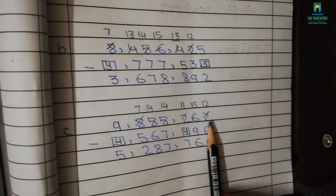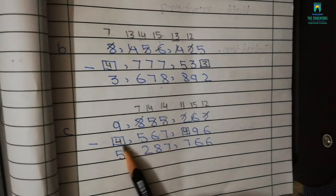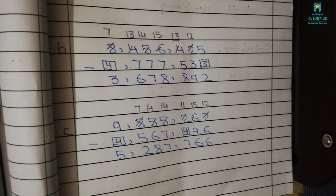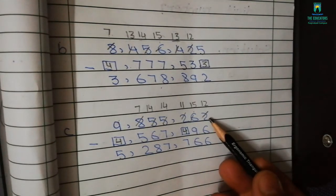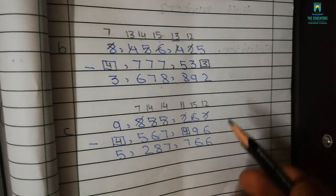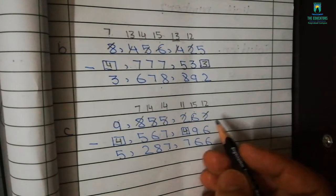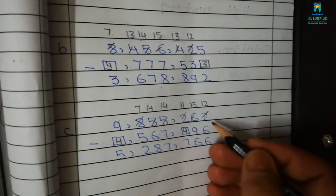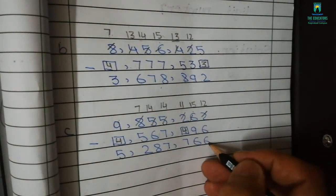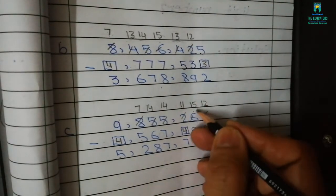Again here some values are missing and the answer is given, so we have to think about the values which are missing. We will start from units and we have to subtract the second number values from the first values. Here we have 6 and we can't subtract 6 from 2.